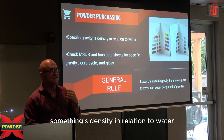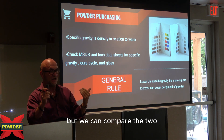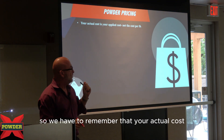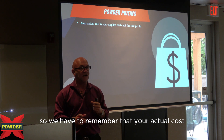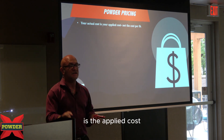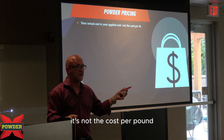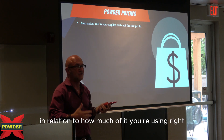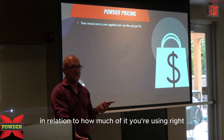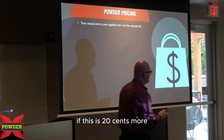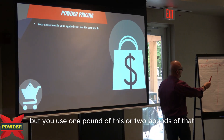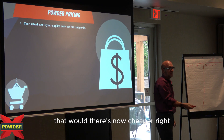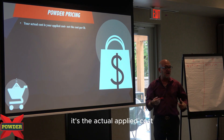Specific gravity is something's density in relation to water, but we can compare the two. We have to remember that your actual cost is the applied cost — it's not the cost per pound. It's the cost per pound in relation to how much of it you're using. If this is 20 cents more but you use one pound of this versus two pounds of that, that one is now cheaper. It's the actual applied cost.